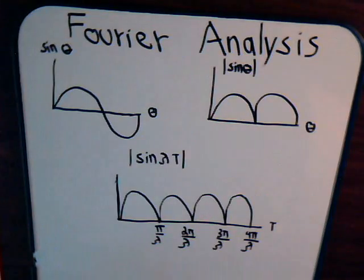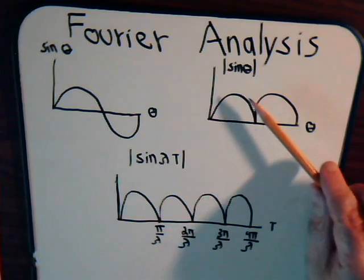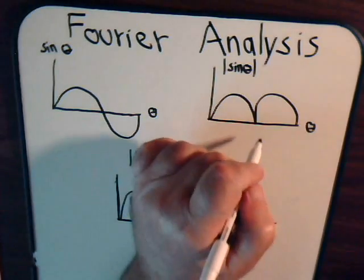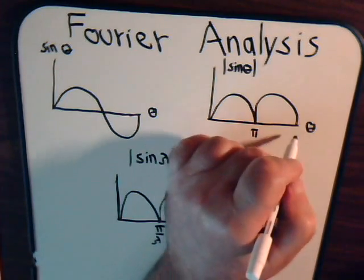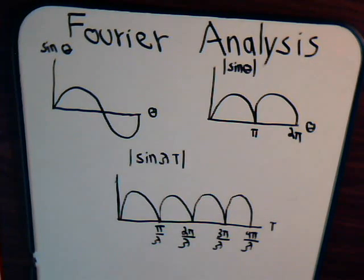In the last video, we found a Fourier expansion for a sine function where we're taking the absolute value of it. We get this kind of wave pattern, where this is π and this would be 2π. We found an expression for a Fourier expansion using the trigonometric form.